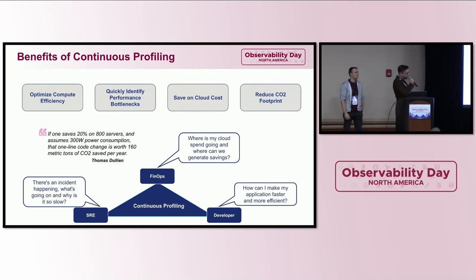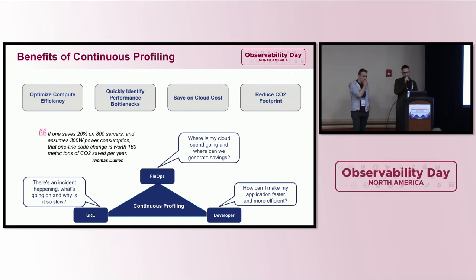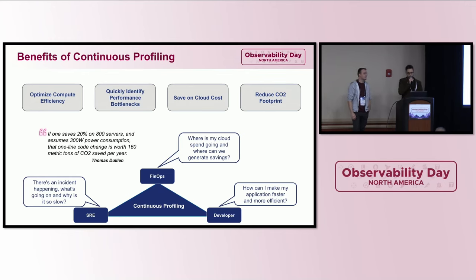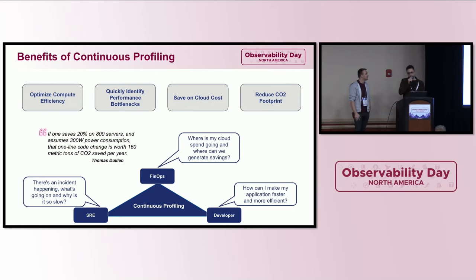Hyperscalers like Google have had data center-wide continuous profiling for some time. Google calls it Google-wide profiling and those papers have been very influential, but generally continuous profiling has not been widely available. Contemporary profilers have problems with production binaries that are compiled without frame pointers and without symbols, and they typically don't support high-level language runtimes without application instrumentation. It would be great to make a low overhead continuous CPU profiler that's easy to deploy available to everyone.